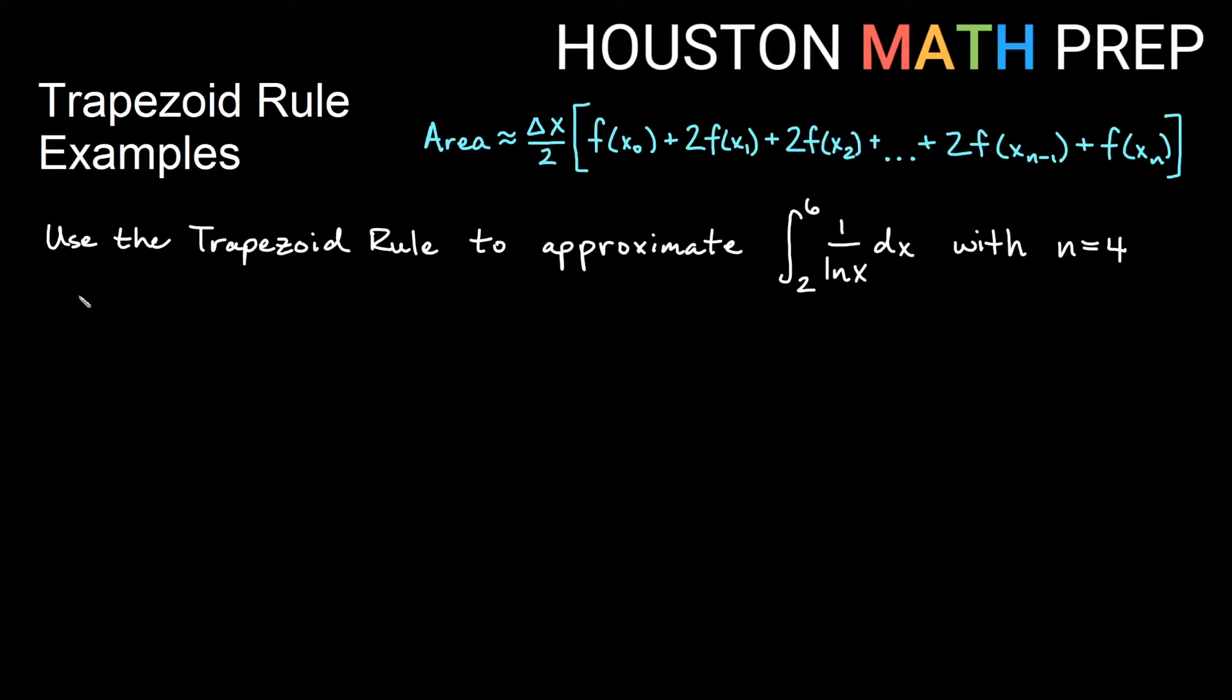First thing that we'll do is go ahead and get our delta x. So if I am going from 2 to 6 and I have n equals 4, remember delta x is b minus a over n. So in this case, it will be 6 minus 2 over 4, which happens to be a very convenient number 1.